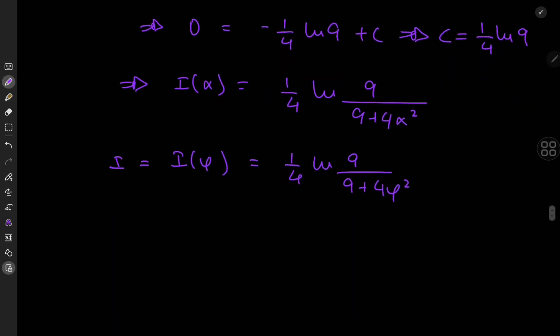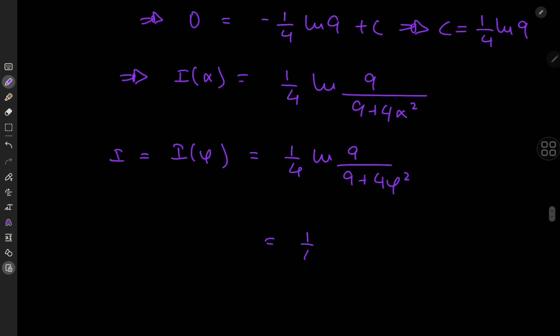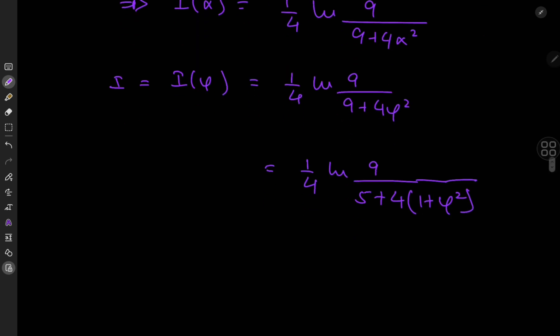And this can be simplified further by writing this as a quarter of log 9 divided by 9, no wait, 5 plus 4 plus 4 phi squared. So I'm just going to factor out that 4 right now. And what exactly is 1 plus phi squared? We know that phi squared minus phi minus 1 equals 0. So this implies that phi squared is just phi plus 1. So for phi squared plus 1, that is, we need to add 1 on both sides. So we get phi squared plus 1 equals phi plus 2.